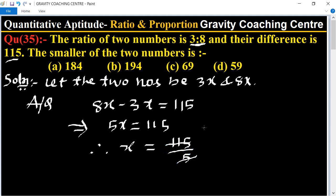So 5 into 115: 5 ones are 5, 5 twos are 10, 5 threes are 15, giving us 23.